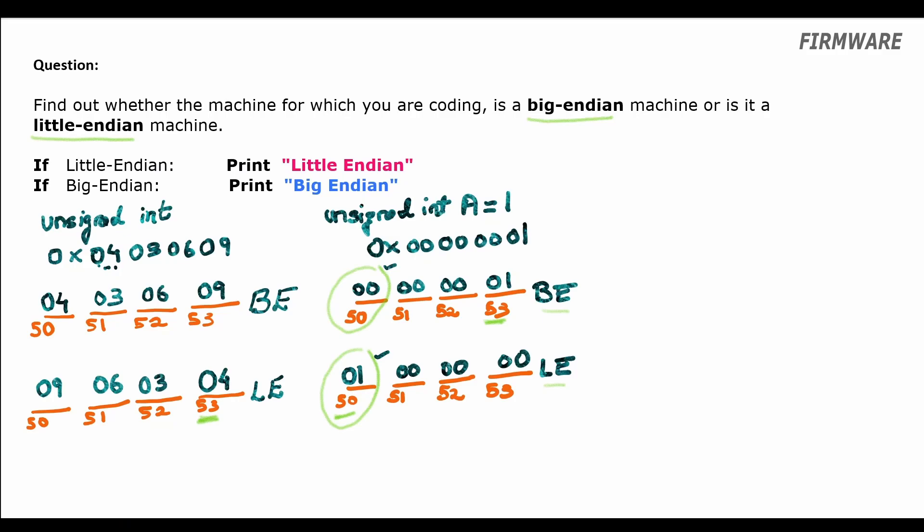To find the starting memory address, which in our example was 50 for the variable a, we will declare a pointer variable p and in p, we will store the address of the variable a. Now a is an unsigned integer type which is of 4 bytes in size. To check the content of only a single byte starting from the address p, we need to use a data type which is of 1 byte in size.